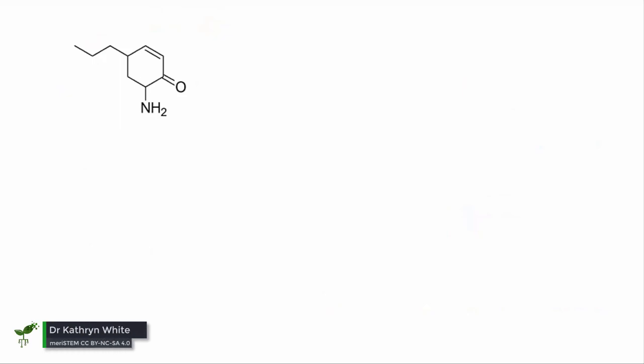Lastly, a bit of a tricky one to finish off with. Where to start? Well, the two functional groups—the ketone and the amine—are both on the ring, and there's also a double bond in the ring, making it an alkene. So that means the ring is going to be classified as the main chain.